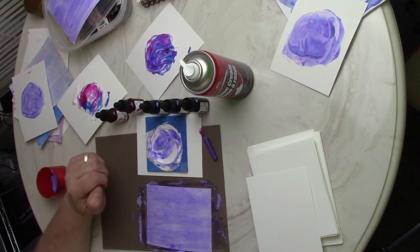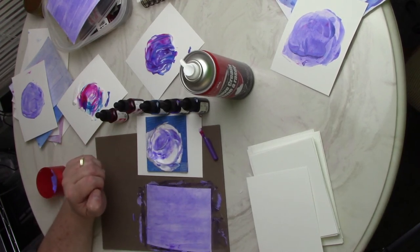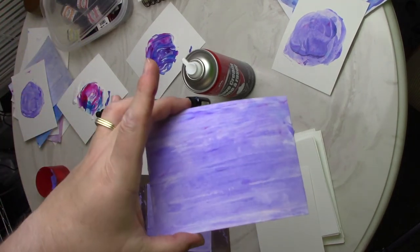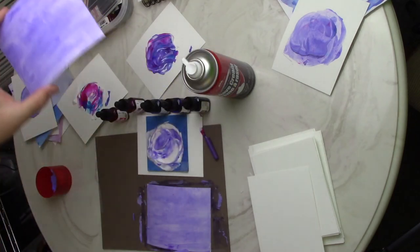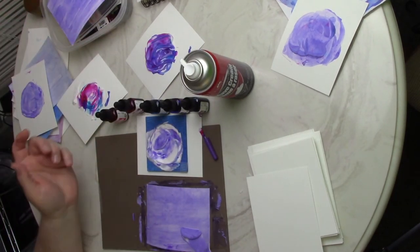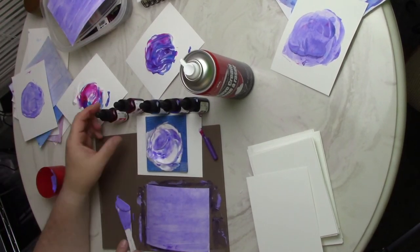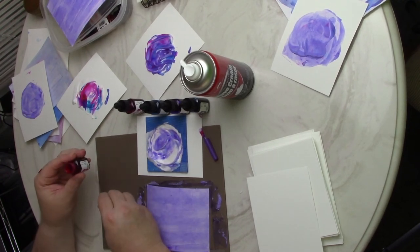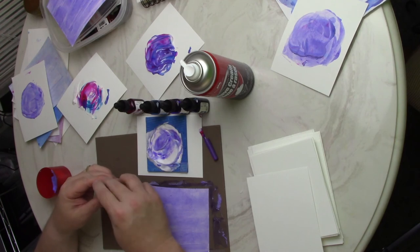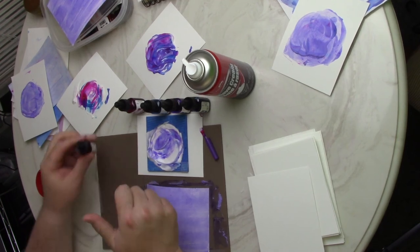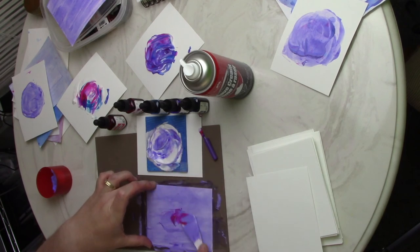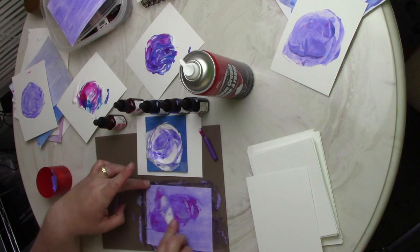So this is looking really purple but if you look at what I did earlier there are still other colors that you can see. I could add more color, maybe a drop of red back in, and swirl it around a little just to give it a little different look.